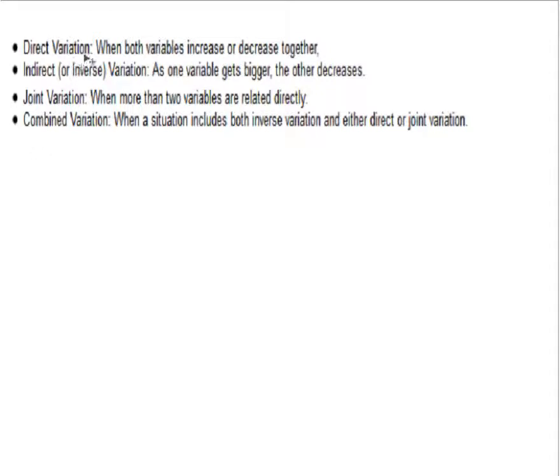Direct variation is where we're going to start. Direct variation is a situation in math where you have both variables in an equation increase or decrease together. The assumption is that there's two variables, generally x and y, but not necessarily, but both variables increasing or decreasing at the same time.